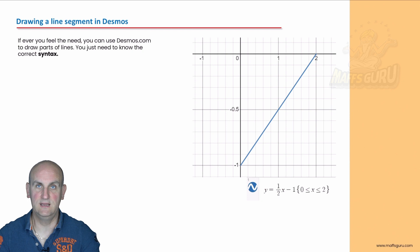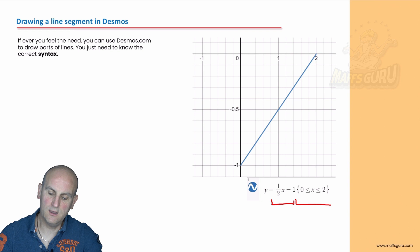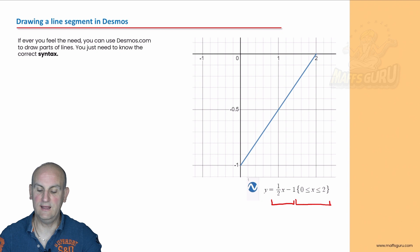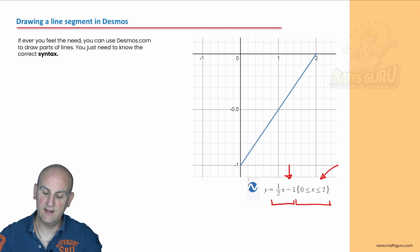If you ever want to draw these things on Desmos it's really easy. Take your equation and then these curly brackets tell you where to limit your x values — so it means draw the equation of half x minus 1 only between the x values of 0 and 2.